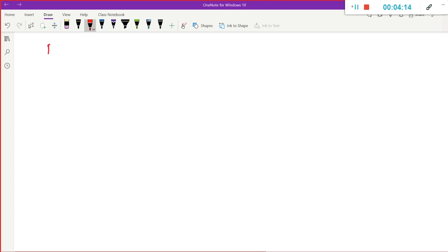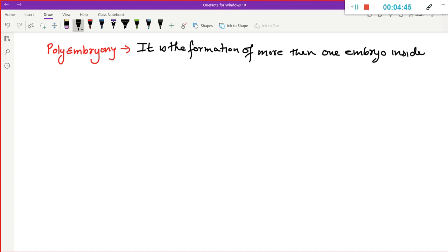See, the next condition which we are going to talk about is Polyembryony condition. Now, whenever we talk about Polyembryony condition, what is Polyembryony condition? It is the formation of more than one embryo inside the seed.